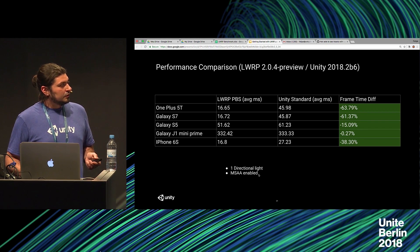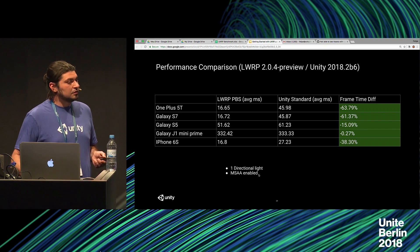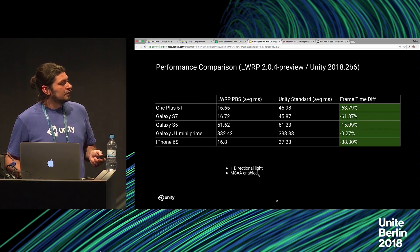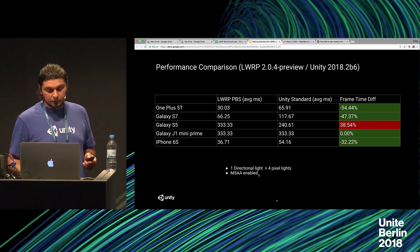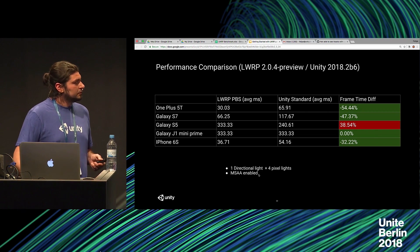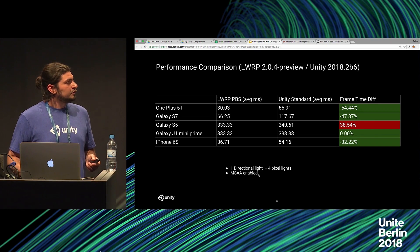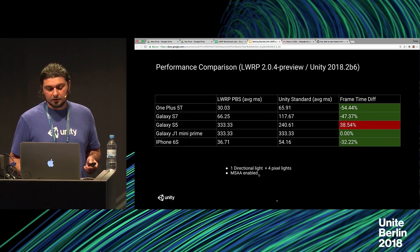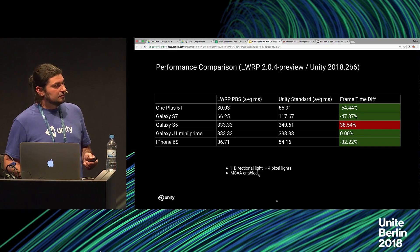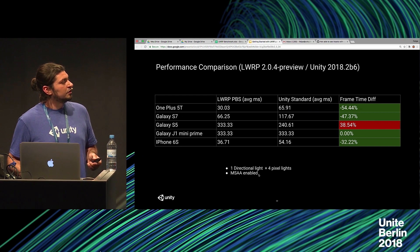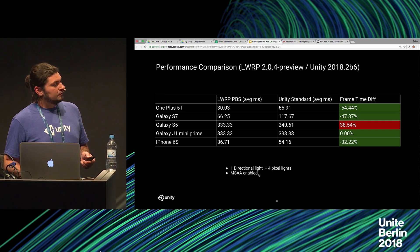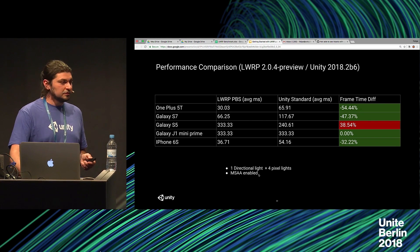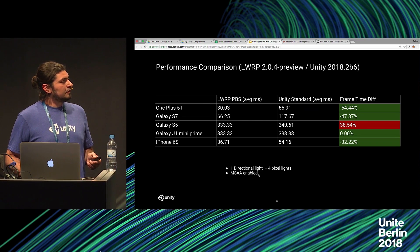The idea for Lightweight Pipeline is to provide a very fast path for a single directional light, which is the most common scenario in mobile games. Here is the same scene with additional four pixel lights — on the Galaxy S5 we're doing worse at the moment. Optimization for Lightweight is still in progress. What's happening is that because we shade lights in a single pass, we have branching and indexing on local lights, and on low-end devices this can be very costly depending on your scene.